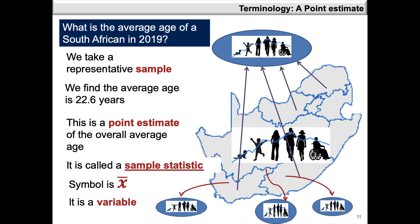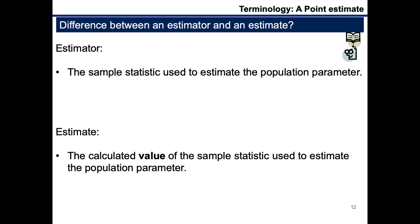Since we're able to take multiple samples and therefore end up with different values of X bar, X bar is going to be referred to as a variable. The difference between an estimator and an estimate is that an estimator is a sample statistic used to estimate the population parameter, whereas the estimate is the actual calculated value of that sample statistic that we use to estimate.